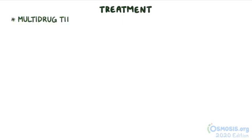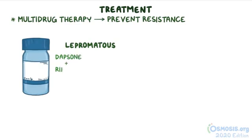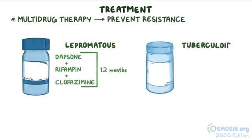Treatment for leprosy is done with multidrug therapy to prevent resistance. The lepromatous form is treated with dapsone, rifampin, and clofazimine for 12 months, while the tuberculoid form is treated with dapsone and rifampin for 6 months.